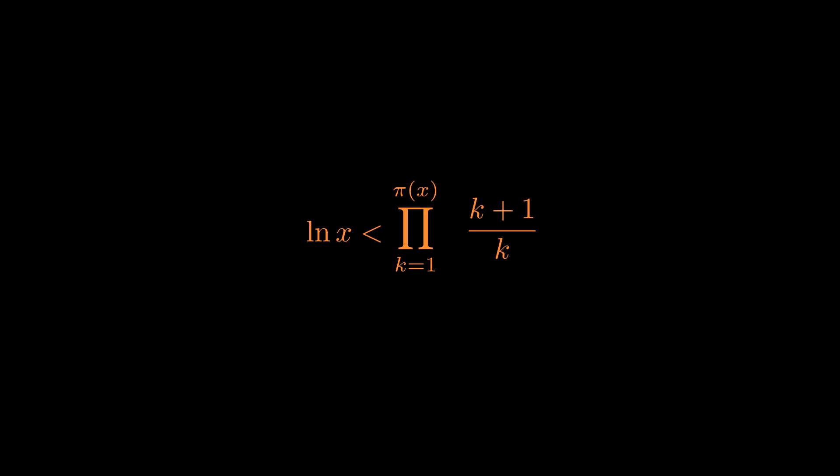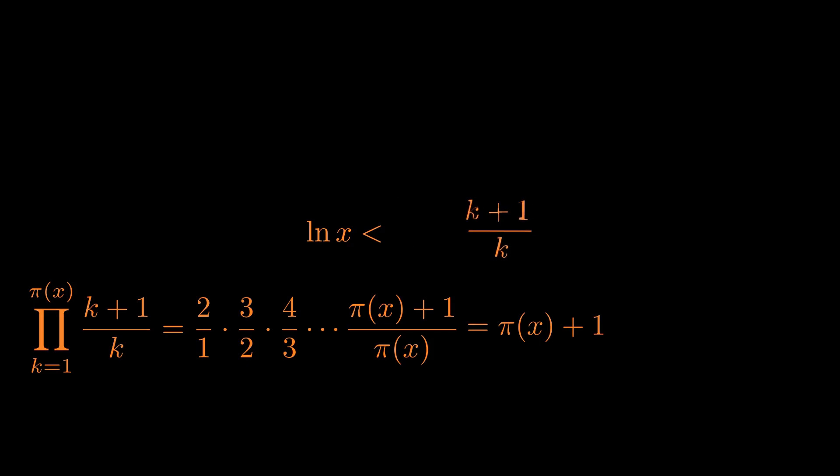Which we can write as (k plus 1) divided by k. So I know that this has actually been a long proof, but you could say that we're almost done. So all we have to do now is to evaluate this product, which when we expand we get 2 over 1 times 3 over 2 times 4 over 3 up to (π(x) plus 1) divided by π(x). So we can see that this is a telescoping product in which the numerator of the k-th term is cancelled out by the denominator of the (k plus 1)-th term, which leads us to the value π(x) plus 1.